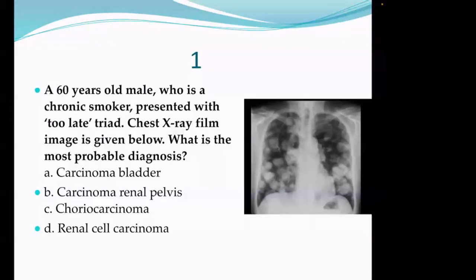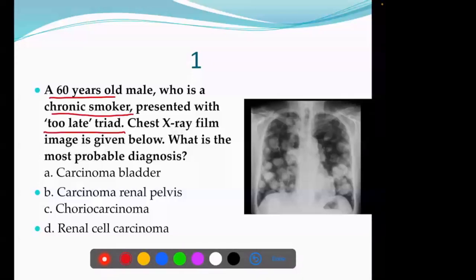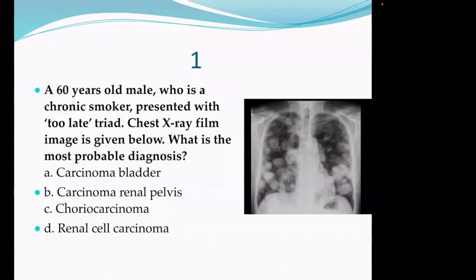Answer this question with clues: old male, 60 years, chronic smoker - smoking is a clue, old age is a clue. The classic triad means hematuria, flank pain, and palpable mass. This is almost saying it's a case of RCC. And see the X-ray - it shows a cannonball appearance, which is cannonball metastasis. With all these features showing metastasis and a classical picture of RCC, you have to say it's RCC.